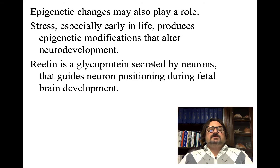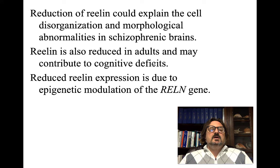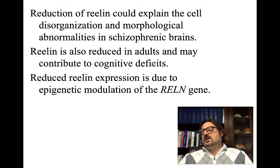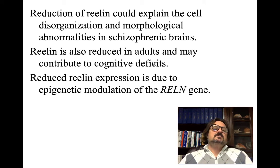Reelin glycoprotein, secreted by neurons, guides neuron positioning during fetal brain development. Reelin may play a role in the complex interaction we're seeing — a reduction of reelin could explain the cell disorganization and morphological abnormalities in schizophrenic brains, and it's reduced in adults and may contribute to cognitive deficits. Reduced reelin expression is due to epigenetic modulation of the reelin gene.